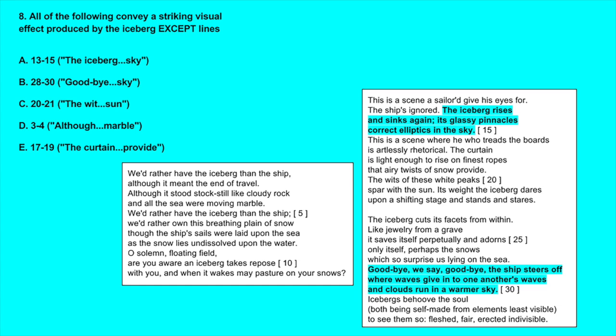C, 20 through 21 - here we have the wits of these white peaks spar with the sun. And then D, three and four - although it stood stock still like a cloudy rock and all of the sea were moving marble. It here refers to the iceberg, the iceberg stood stock still like a cloudy rock.